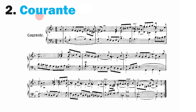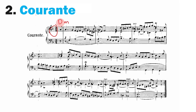The next dance in the set, the courant, is fast and insistent just like the allemande, but the main difference is the meter. The allemande was in 4/4 time, but this courant is in 3/2 — it's in triple meter. This particular courant was written in the slower French style, as opposed to Italian courants, which tended to be a little bit faster. And all of the dance pieces in the set are in a minor key. I find that the courant tends to have a more emotional sound than the allemande.